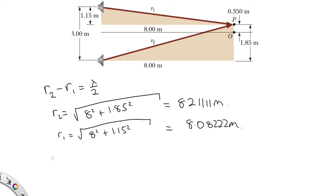OK, so R2 minus R1 is lambda over 2 is 8.21111 minus 8.08222. Solving that, we get 0.129 meters. So our wavelength is equal to 0.2579 meters.